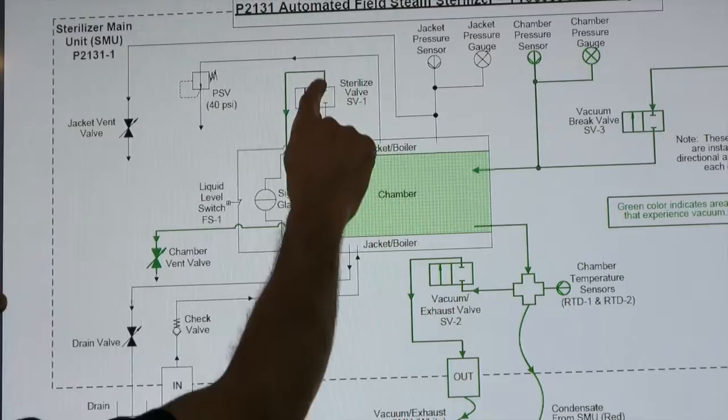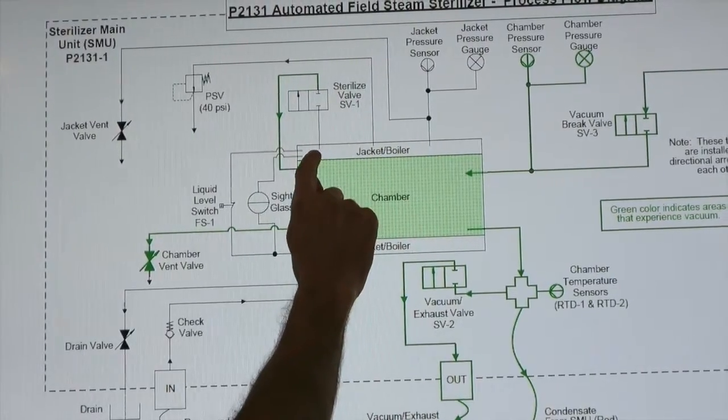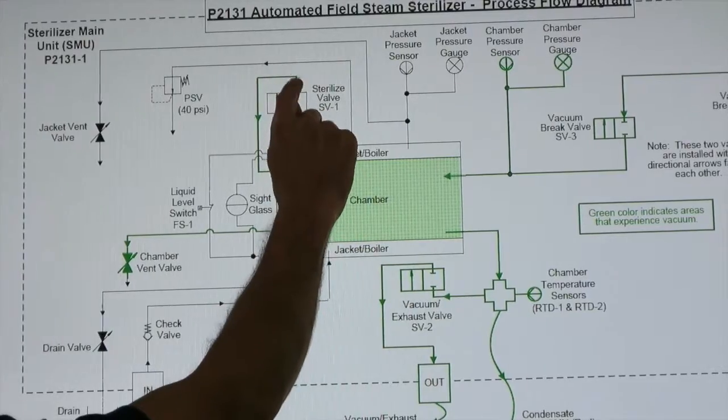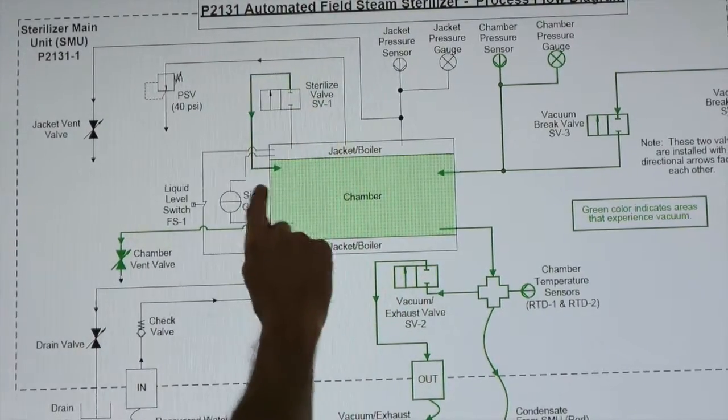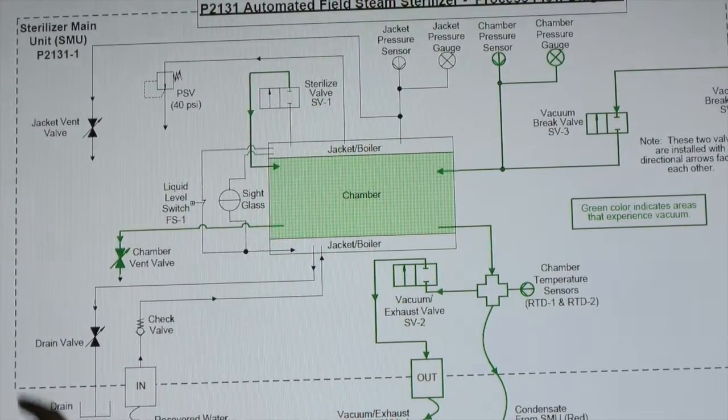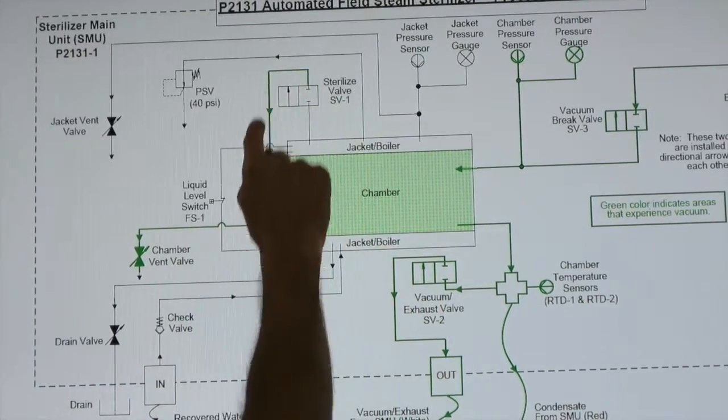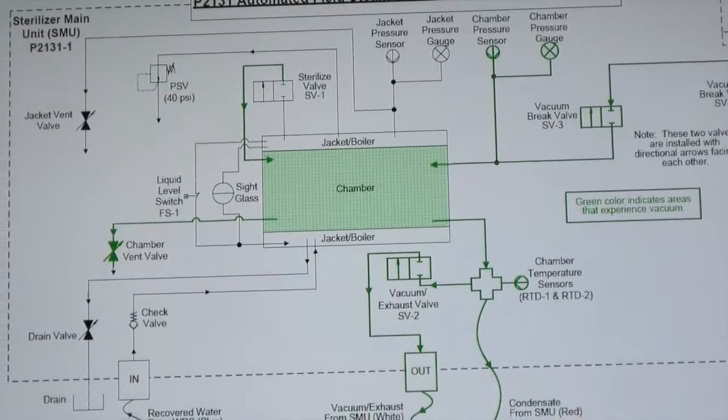So you can see it's connected to the chamber. Up here you can see that the sterilized valve, which is connected to the jacket boiler, when it opens, it connects to the chamber. So if that valve was not operating correctly and it was allowing steam to leak from the jacket into the chamber, you may not pass vacuum leak tests.